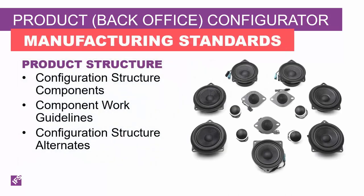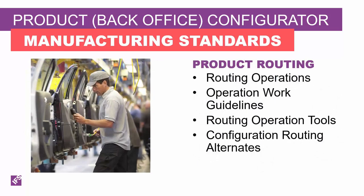It is possible to select appropriate materials from a configuration structure based on product configuration rules. You can define rules to select related component material work guidelines. To simplify administration, it's also possible to establish rules to select a configuration structure alternate instead of using row-by-row rules in the default structure. Likewise for routings, it is possible to select appropriate operations and their related work guidelines using rules, or establish a rule to select a routing alternate to generate the appropriate set of operations, tooling, and work guidelines.